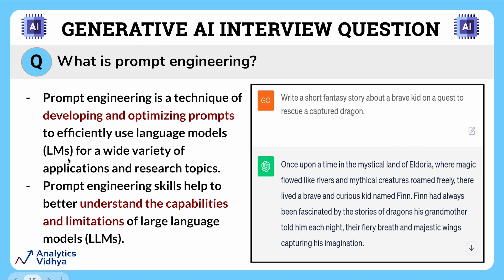Now let's focus on the prompt engineering part. Prompt engineering is a technique for developing and optimizing prompts to efficiently use large language models for a wide variety of applications and research topics. It means giving your AI model the specific instructions of what to do by using the right words and details in your question or request. This helps the computer understand your needs better and give you a more accurate and coherent response.